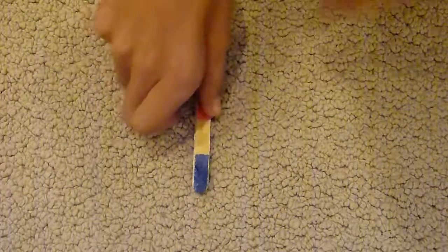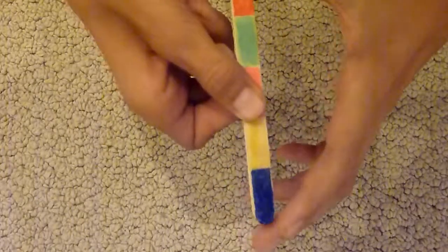Watch this. Now as you can see, my wand is rainbow on both sides and I'd like you to choose one color out of this.